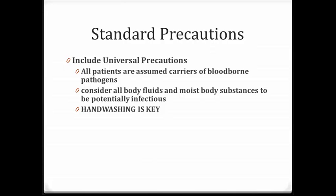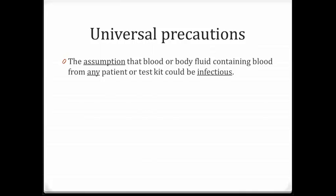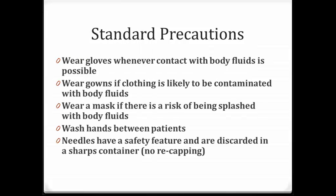Standard precautions include universal precautions, where all patients are assumed carriers of bloodborne pathogens. Consider all bodily fluids and moist body substances to be potentially infectious — hand washing is key. The definition of universal precautions is the assumption that blood or bodily fluids from any patient or test kit could be infectious. Wear gloves whenever contact with bodily fluids is possible, wear gowns if clothing is likely to be contaminated, wear a mask if there is a risk of being splashed, wash hands between patients, and needles are discarded in a sharps container.